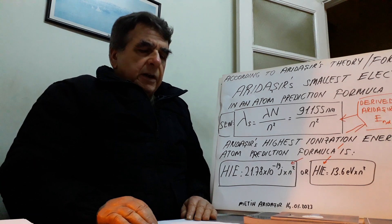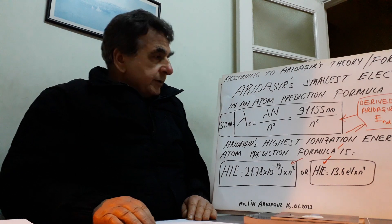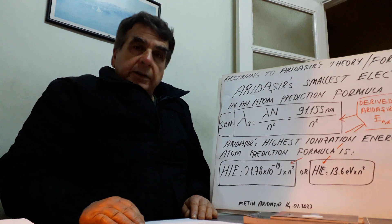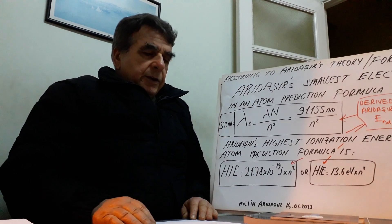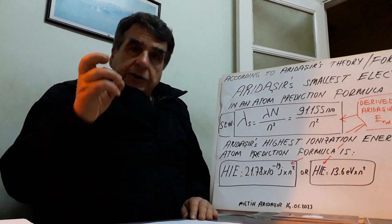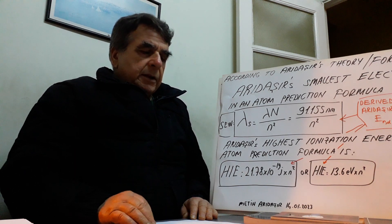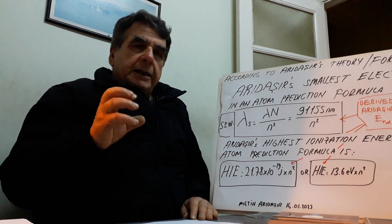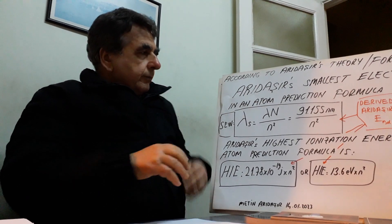These are Adadaşır's highest ionization energy and smallest electron wavelength in an atom formulas. Here, N is the wave number. In a multi-electron atom, each different wavelength size electron stays in this situation as a ground state or undisturbed balance condition — each of them.